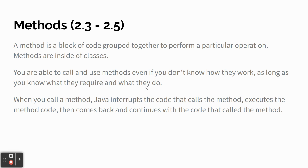You won't have to memorize 'public static void main String[] args' — it'll always be given to you. But we can use and call methods even if you don't know how they work, as long as you know their parameter list and what they do. When you call a method, programs go in order line by line, and when you get to a method call, Java executes that method code and then comes back to where it was.